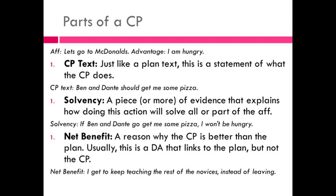So let's talk about the parts of a counter plan. Let's pretend the affirmative plan is 'let's go to McDonald's' and the advantage is 'I'm hungry.' There are three parts: the counter plan text, the solvency, and the net benefit. The counter plan text, just like a plan text, is a statement of what the counter plan does. For example, the counter plan text could be 'Ben and Dante should give me some pizza.' The second part is solvency — a piece or more of evidence that explains how doing this action will solve all or part of the advantage.